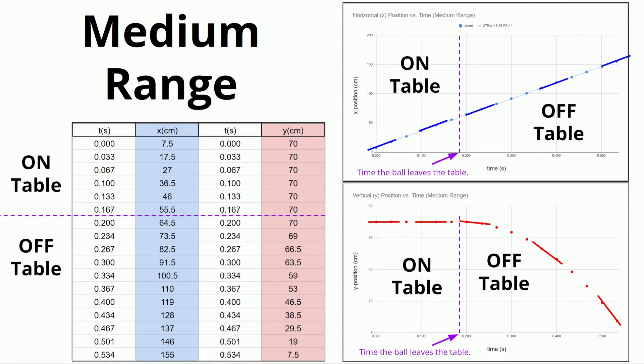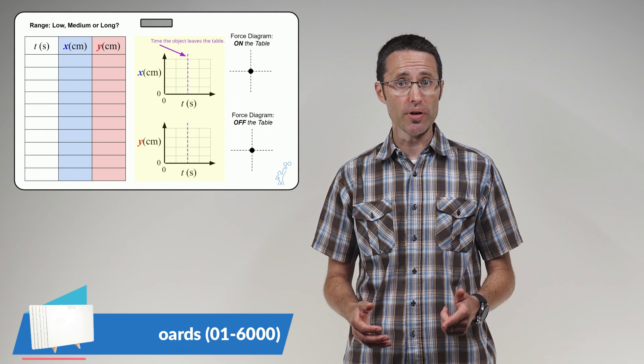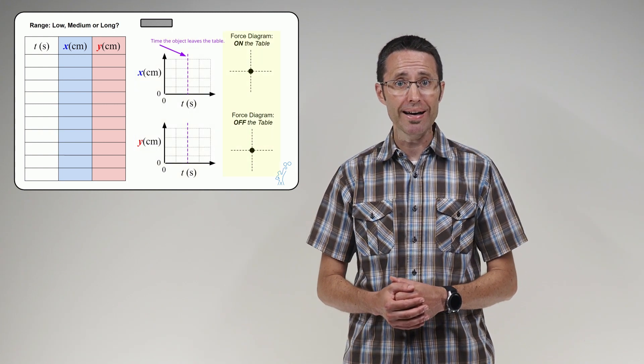At this point in a physics class, students should be good at making qualitative and quantitative conclusions about how objects move based on how their position changes over time. Have students use their collected data to create an X position versus time graph and a Y position versus time graph for the ball while it is moving both on and off the table. Have each lab group create a whiteboard with their data tables, position versus time graphs for the X and Y directions, and force diagrams for the ball both on and off the table.